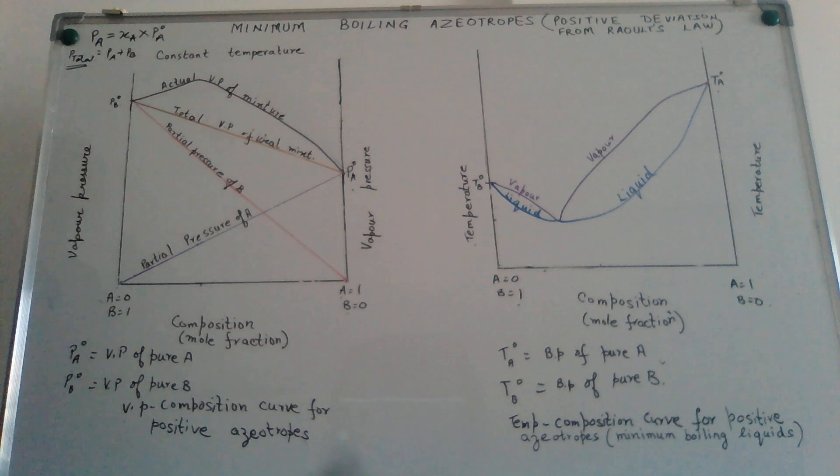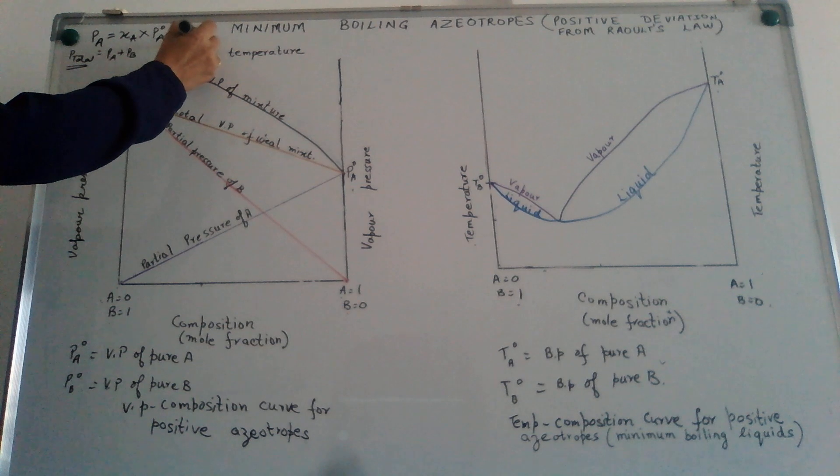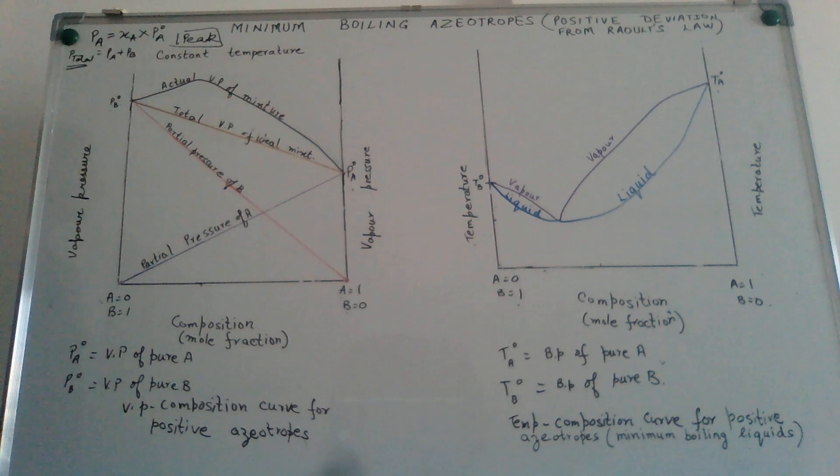Taking the first deviation, the positive deviation from Raoult's law, P for positive, P for peak. This is how I tell my students to remember. How do you remember which graph you have to draw? Because this is the problem that children face during the examinations. They get confused. Details we will continue.